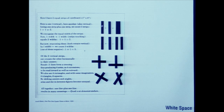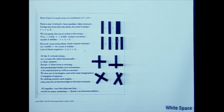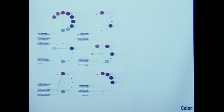Tufte also talks about white space. In this example he shows two strips of equal length, and when placed together at equal distance, they actually create a third implied strip. So the use of white space is something we pay attention to in graphic composition.